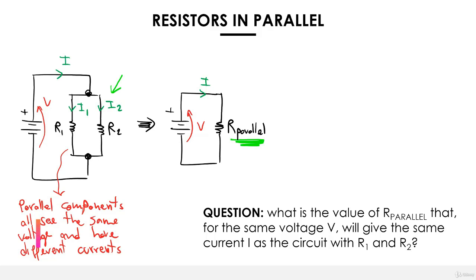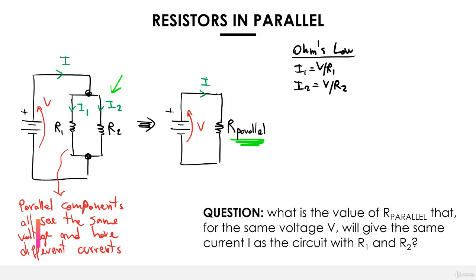Let's start looking at these circuits. The first thing we want to do is define i1 and i2 using Ohm's law. It's very simple: i1 is equal to v divided by r1, and i2 is equal to v divided by r2. We don't have any numbers here, but these are Ohm's law for resistance r1 and r2 — basically the definition of how a resistor works.